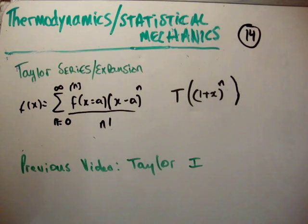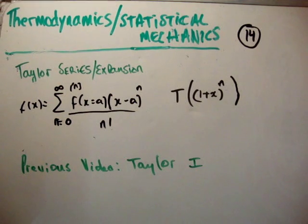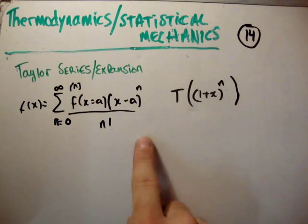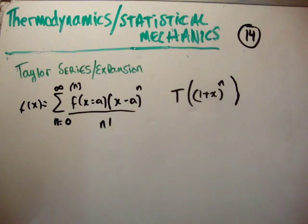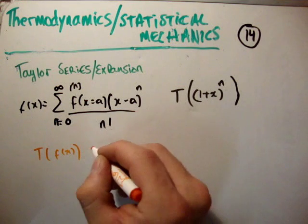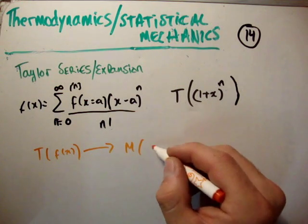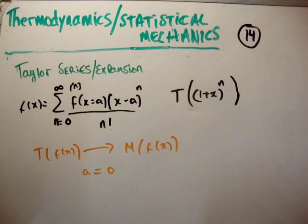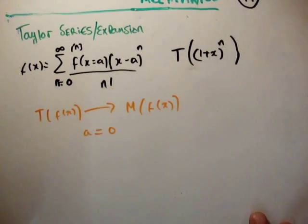So in the previous video, which is on the Taylor expansion, or I call it the sub-video Taylor 1, we got the following formula for the Taylor series. And we know that in order to go from the Taylor series of f of x to the McLaren series of f of x, we set a, or where it's centered at, at different places. So we set it at a is equal to 0.